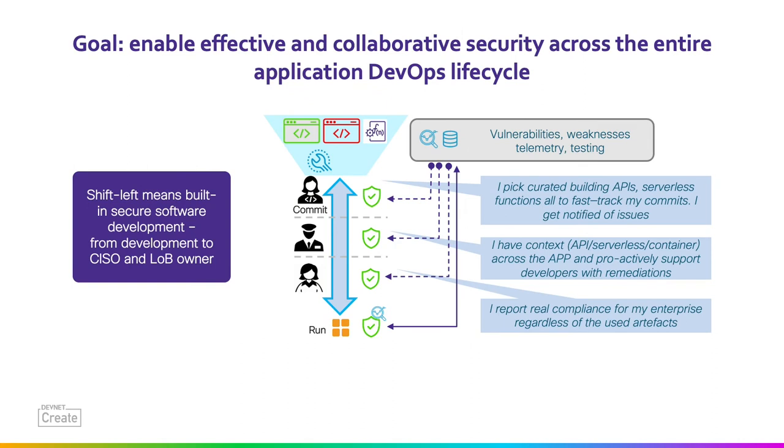The developer becomes the key person to make sure the application remains operable, secure, and well-developed. And that's a perfect storm, because the developer is not really well-equipped to say something about the security aspects or the operational aspects while developing code. To highlight that, consider a simple example: we have a developer, a SecOps person, and the CISO in a typical enterprise environment. The developer's role is to build the application in a secure manner, but they really don't have the tools and insights into what it takes to build a secure application.